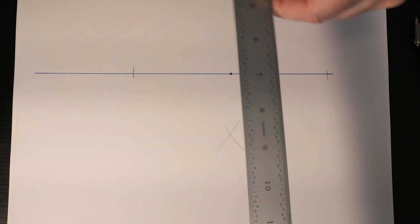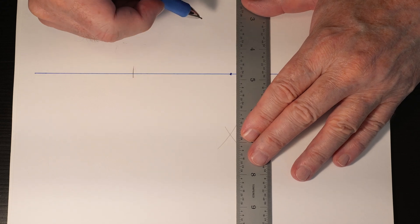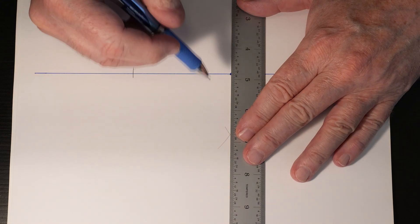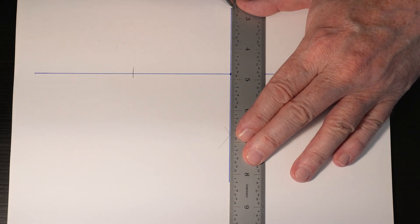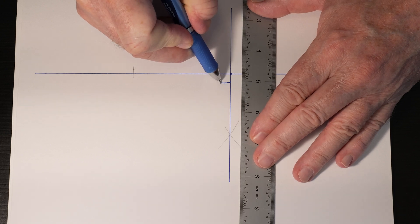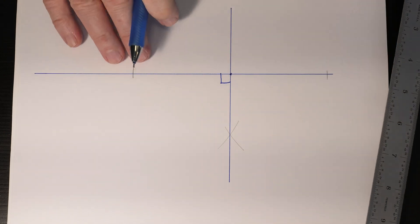Now all you need to do is connect the intersecting point of those arcs with your original point and draw your line, and you'll know that that line is going to be square to the original line.